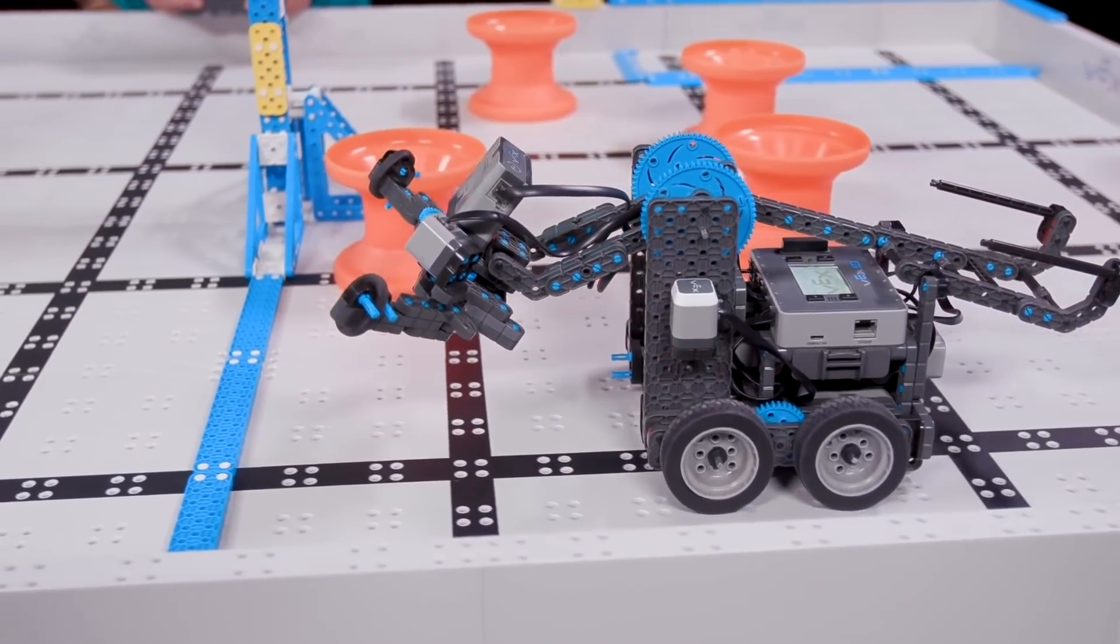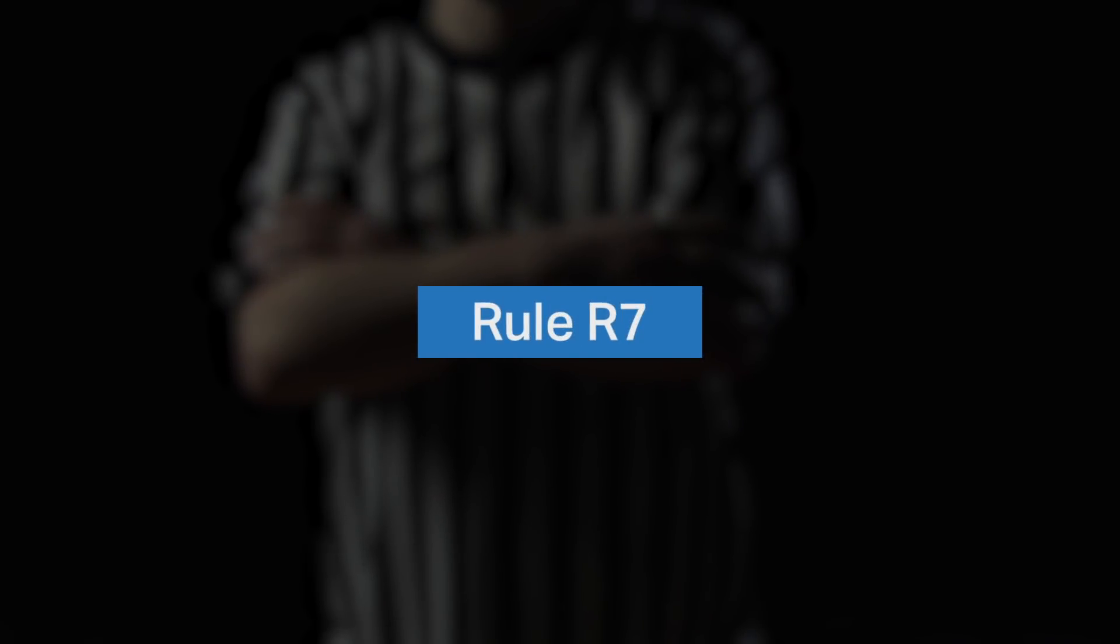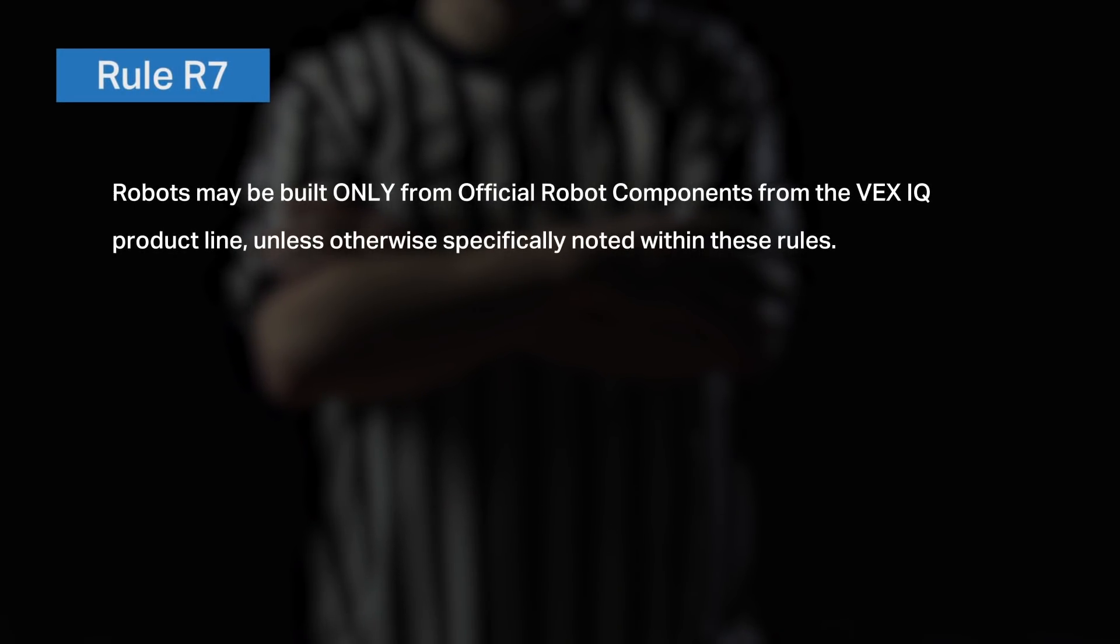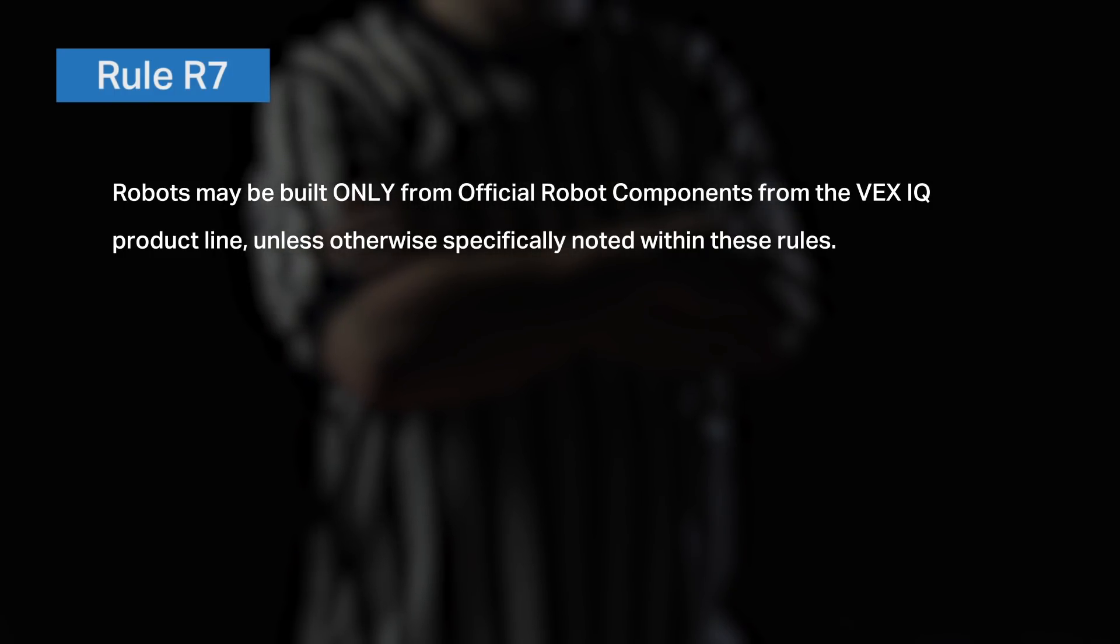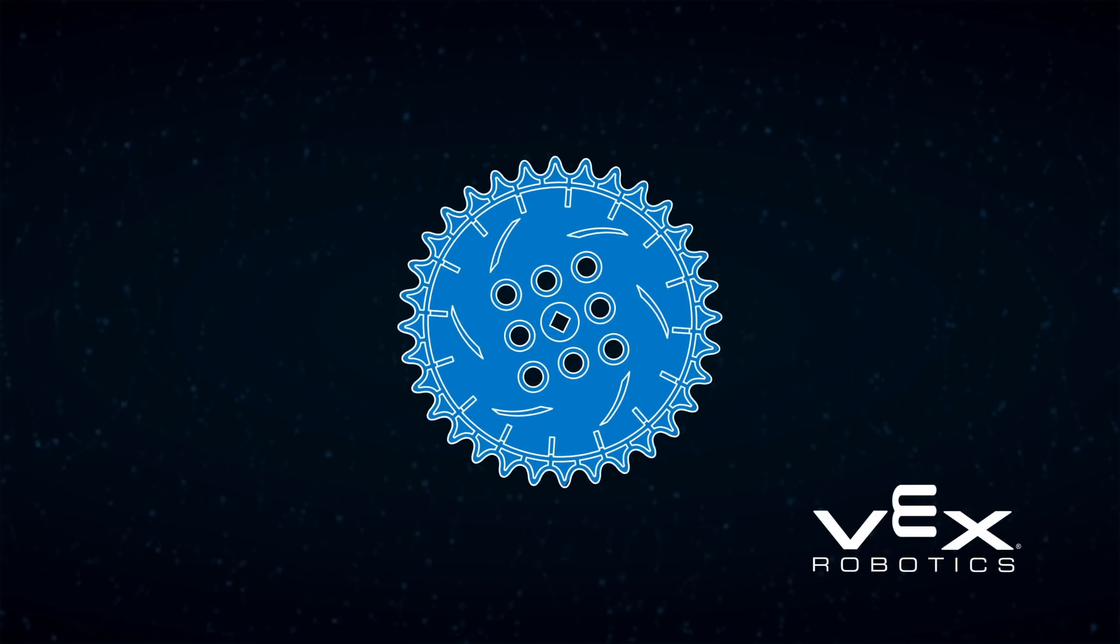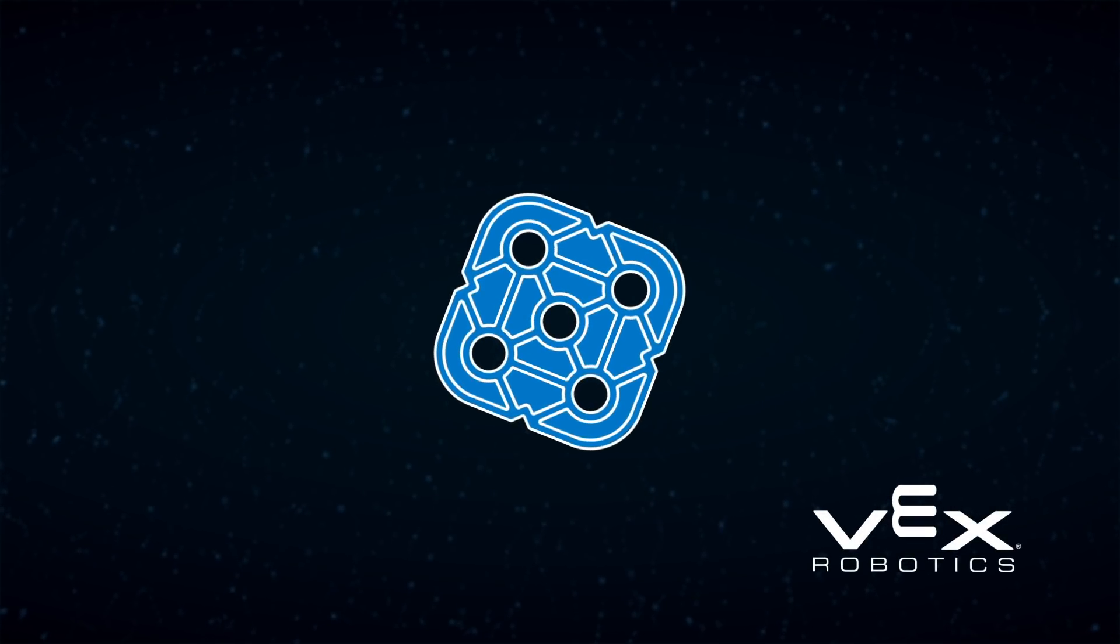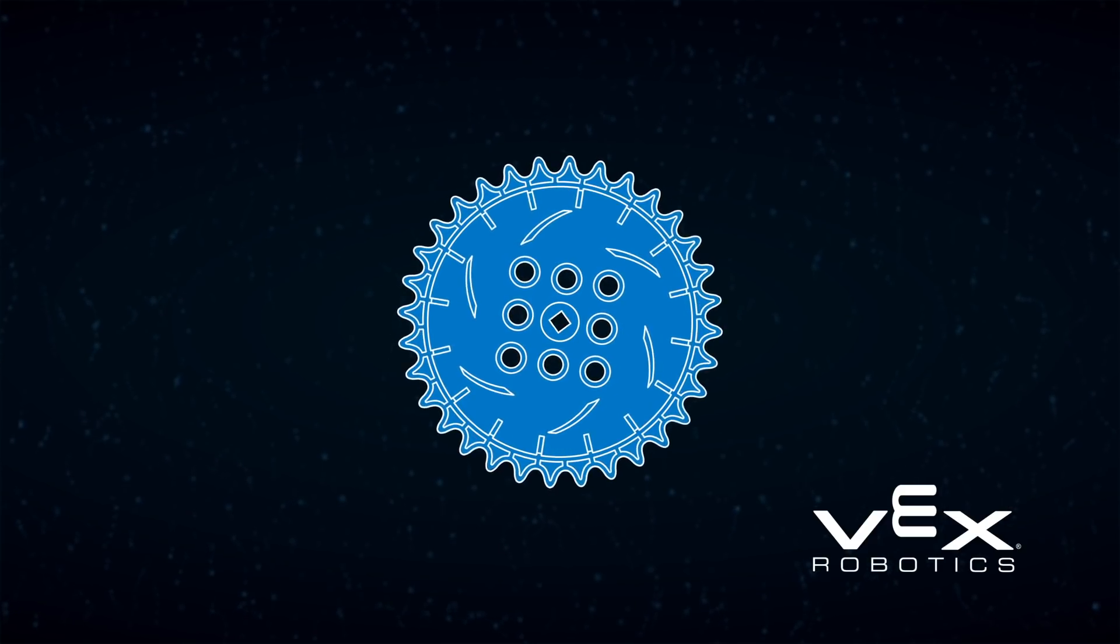Next, let's talk about what parts are allowed for use in the VEX IQ challenge. This is governed by R7, which states that robots may be built only from official robot components from the VEX IQ product line unless otherwise specifically noted within these rules. This is pretty simple. If it is a VEX IQ part and it can be found on vexrobotics.com or in the VEX IQ legal parts appendix, then it is legal for use.